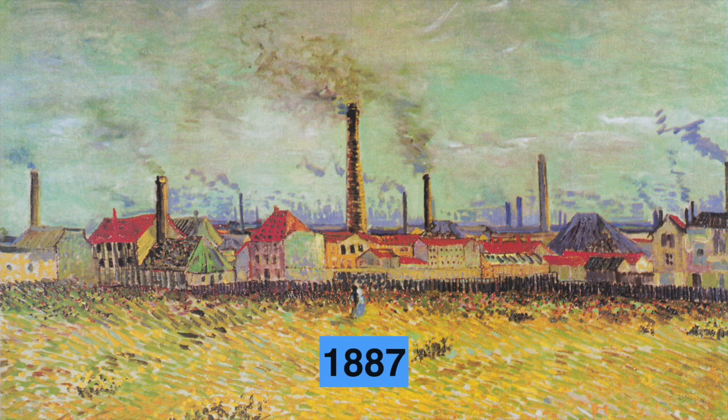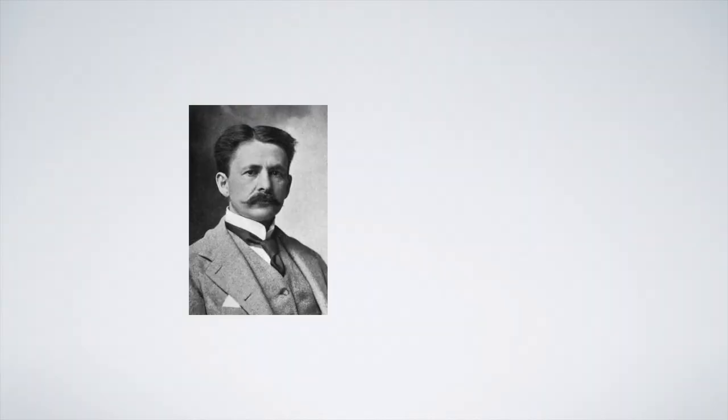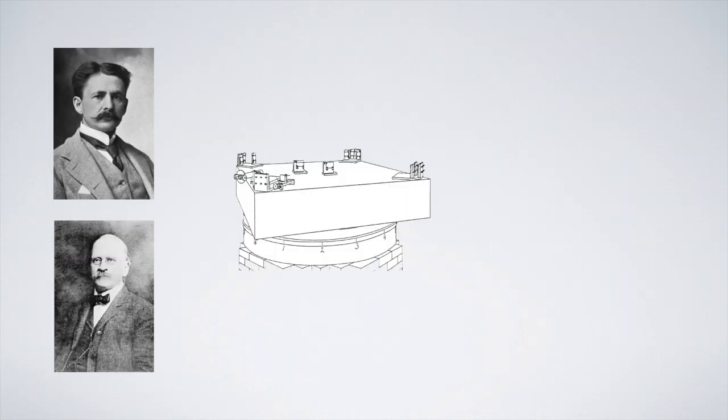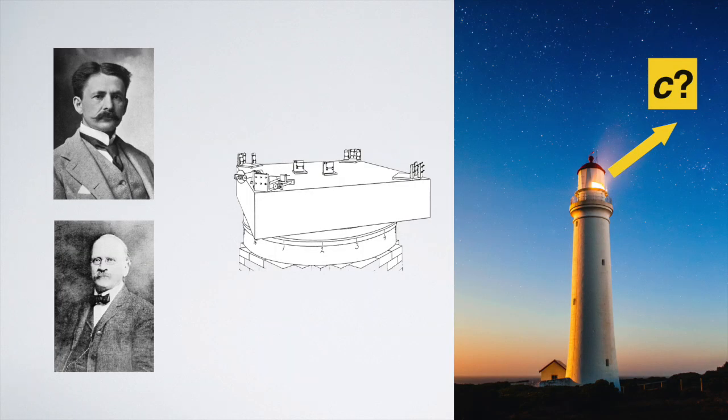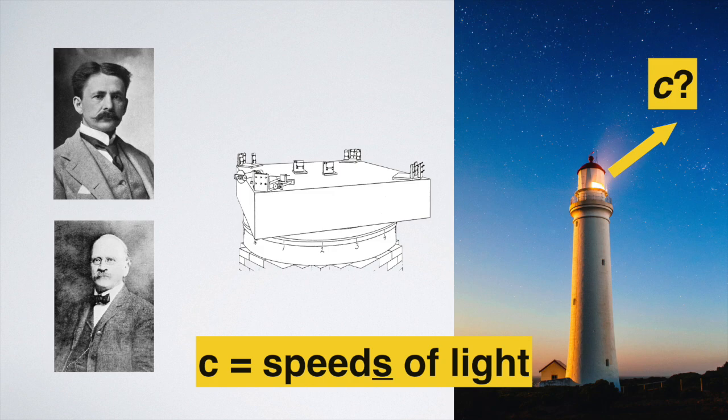Over the summer of 1887, American physicists Albert Michelson and Edward Morley performed an experiment to measure the speeds of light. That's right, speeds with an S.